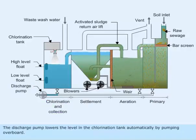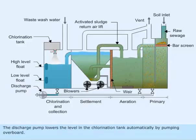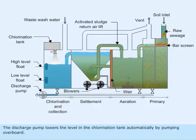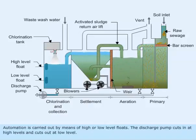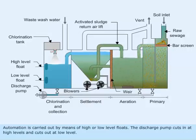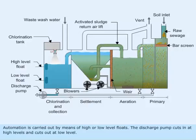The discharge pump lowers the level in the chlorination tank automatically by pumping overboard. Automation is carried out by means of high or low level floats. The discharge pump cuts in at high level and cuts out at low level.